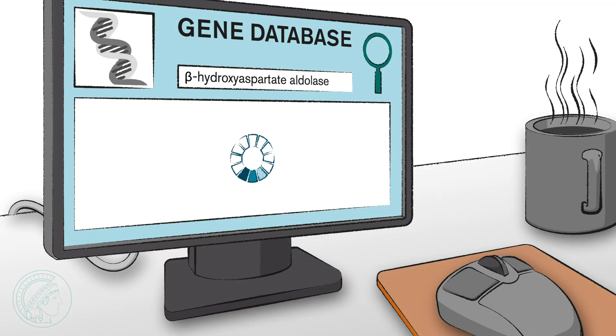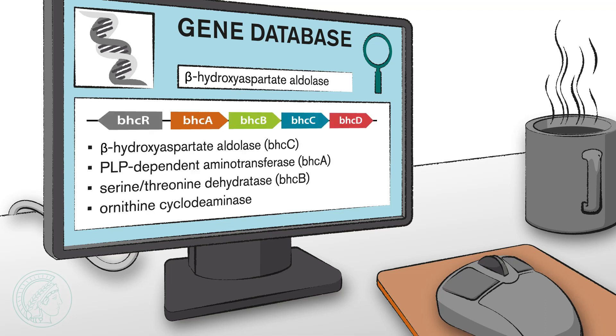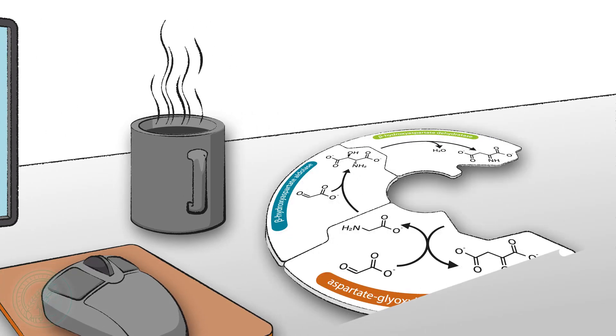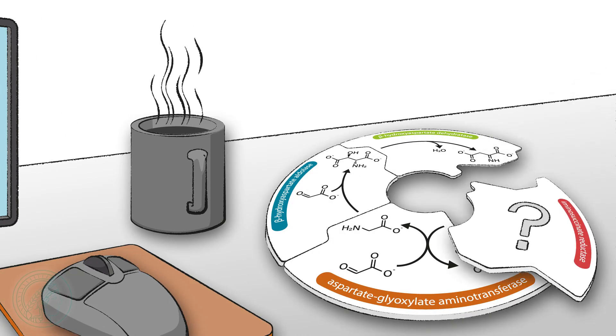They searched for associated genes and found a cluster of four, coding for four enzymes. The functions of three of them were already described in the BHA cycle. So, what was the function of the fourth enzyme?